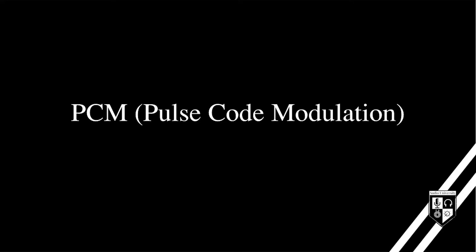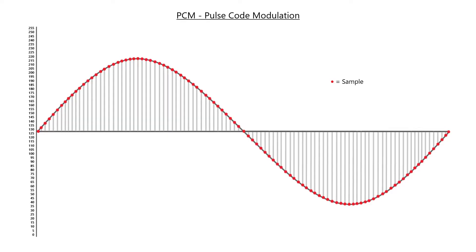Now let's discuss digital audio. PCM, or pulse code modulation, is the primary method used to store audio signals as digital information. PCM creates a model of sound waves by storing a sequence of numerical values that represent the amplitude or intensity at various points along the wave. These values are stored as groups of bits called samples, and this process is called quantization.